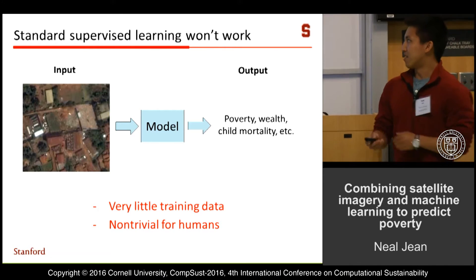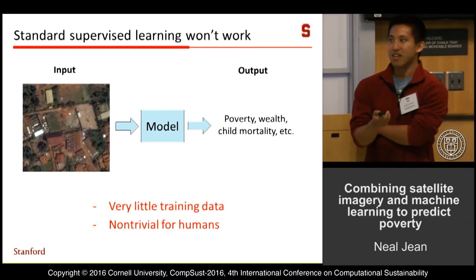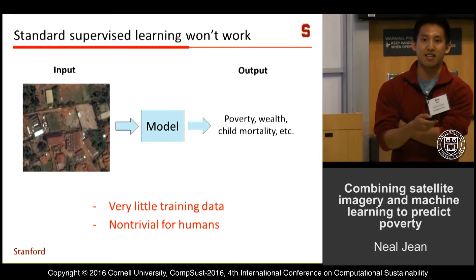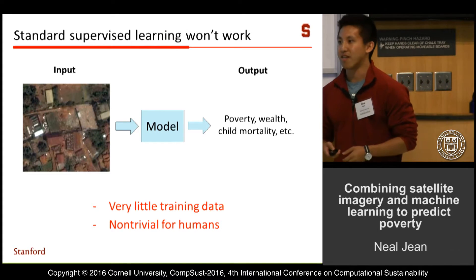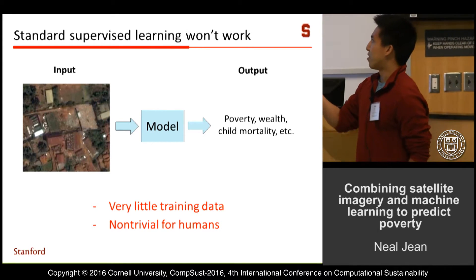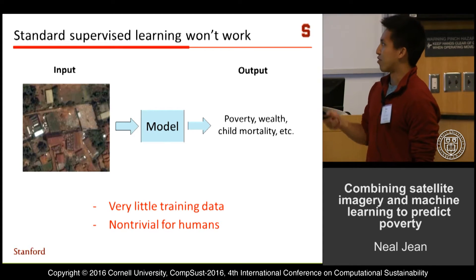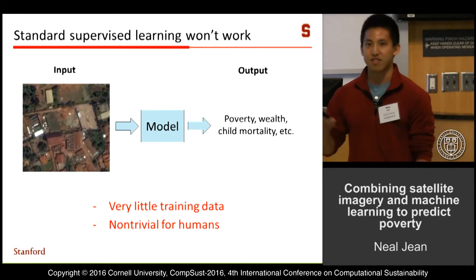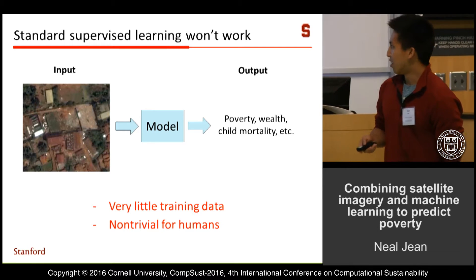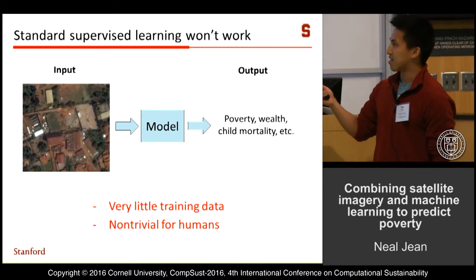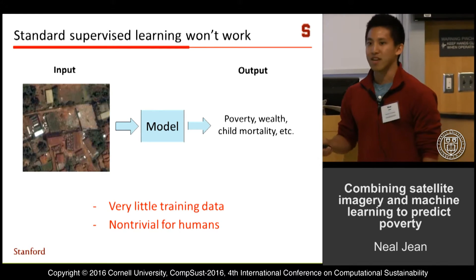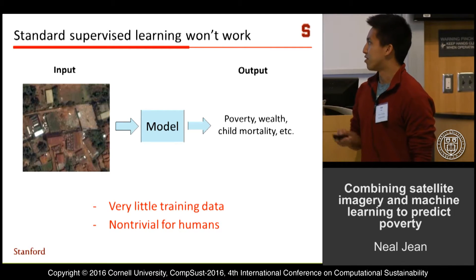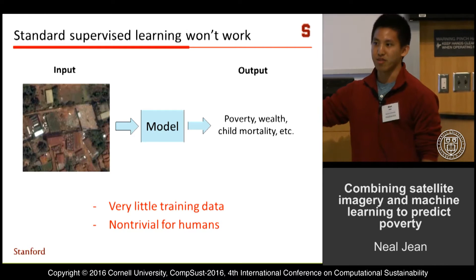The big reason we want to do this is because we don't have very much labeled data, and that prevents us from taking a standard supervised learning approach. In that approach we'd have satellite images as input and outcomes as ground truth labels, but we don't have enough of those to train a very complex model. Another problem is that this task is non-trivial for humans, so it's very hard to use Amazon Mechanical Turk to have people label images with whether people living there are poor.